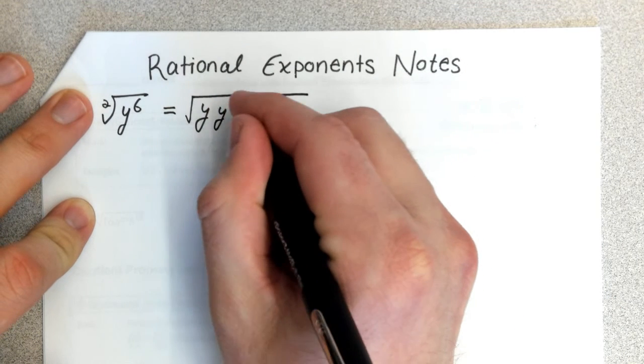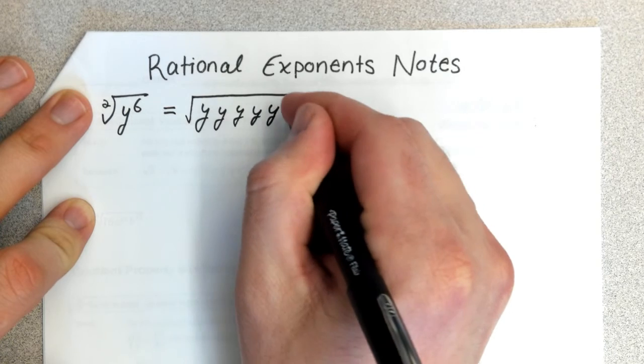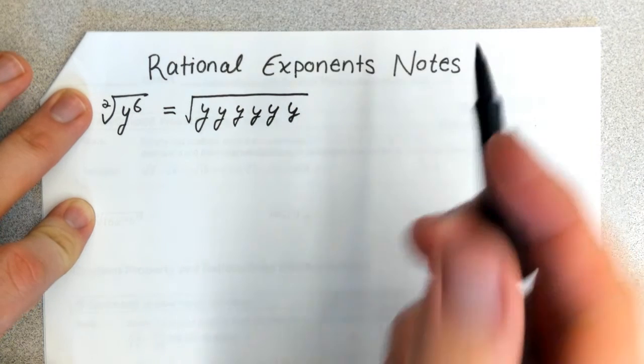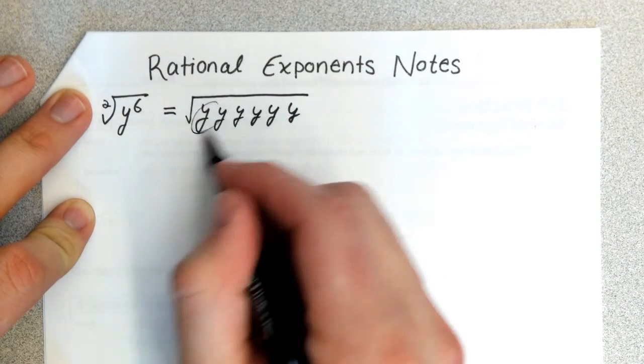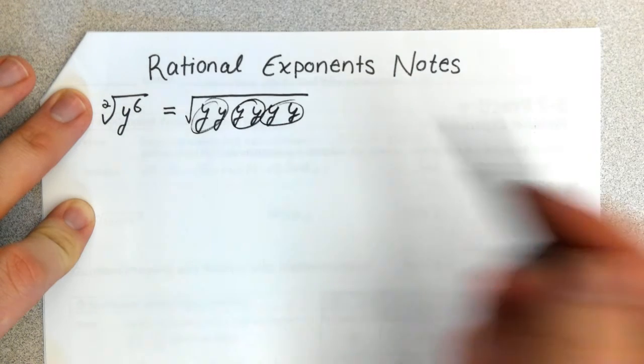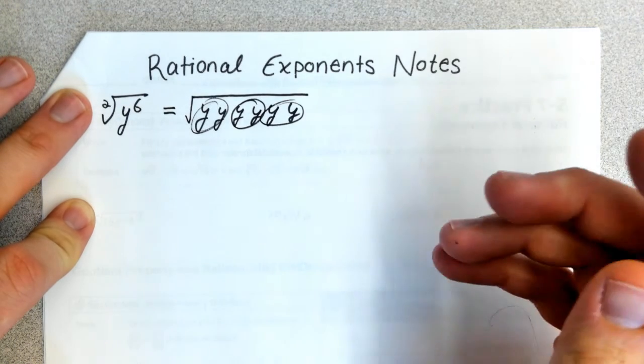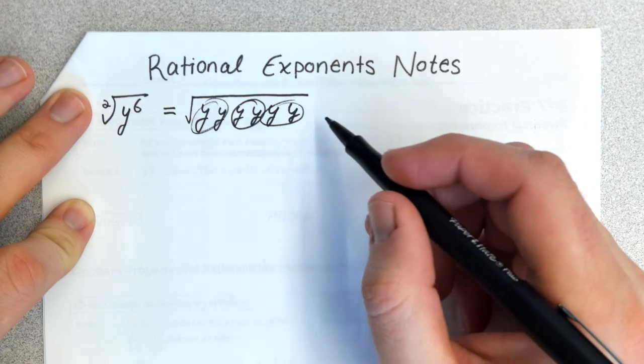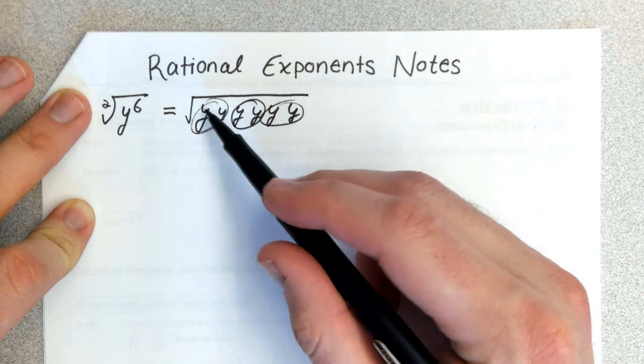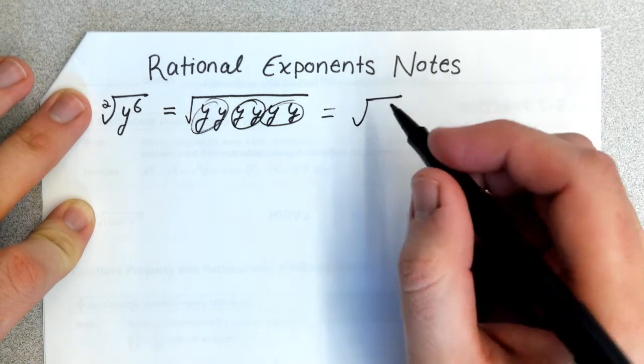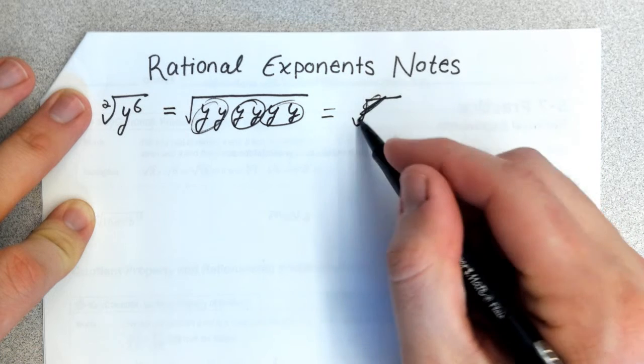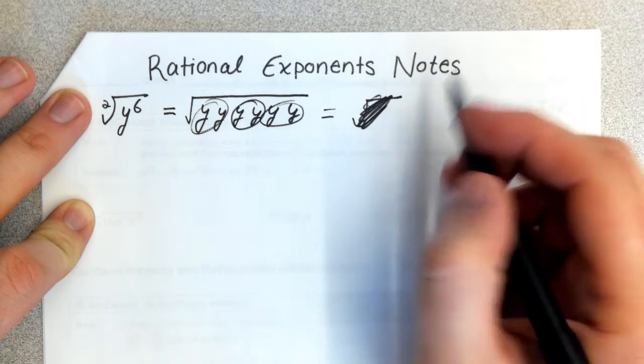There are three pairs of y's, so the square root of y^6 equals y^3.